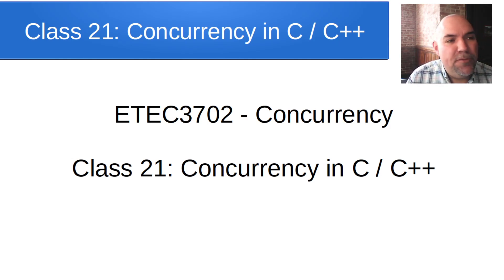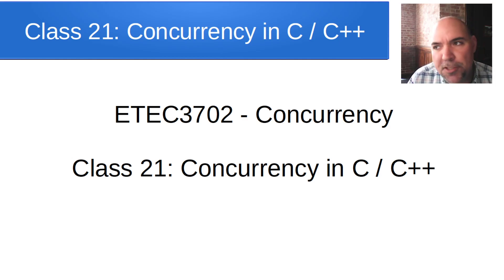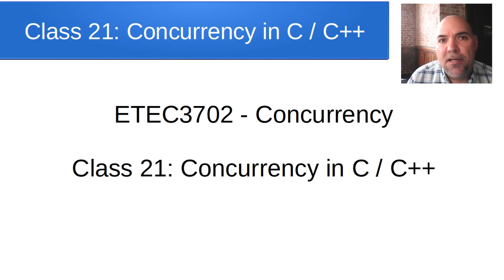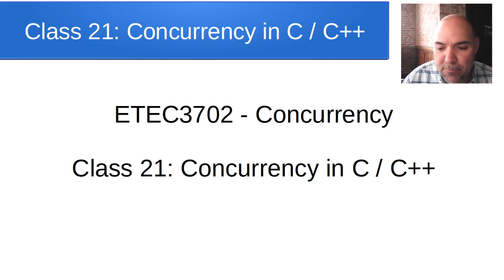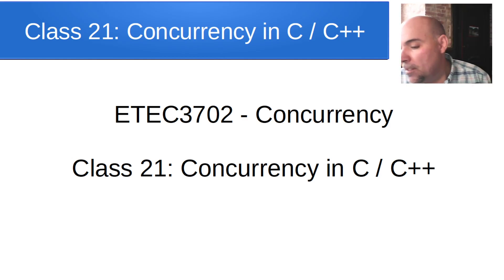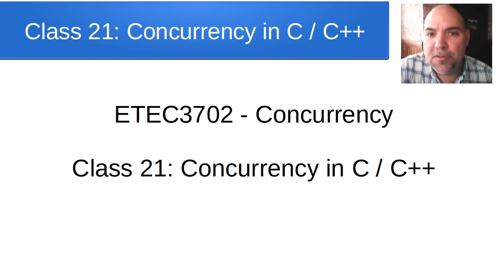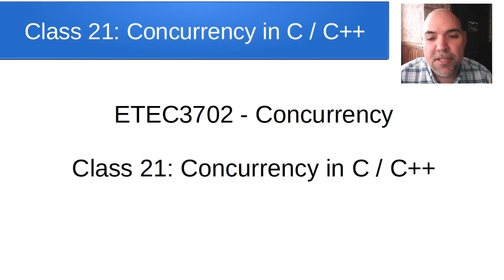What I want to finish up with is: we've done a lot of Python concurrency. I've tried to focus on the concepts — synchronization, the difference between threading and multiprocessing, when to use each, shared memory versus interprocess communication versus asynchronous programming. We've used Python, but I want to give you a taste of concurrency in other languages. Concurrency isn't a Python-specific thing — it's anywhere you have concurrent operation.